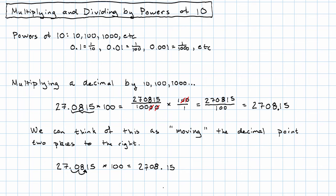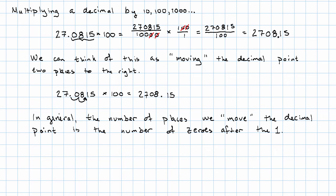So when we multiply by 10, 100, 1000, or something like that, we move the decimal point to the right. The number of places we move it is equal to the number of zeros after the one.